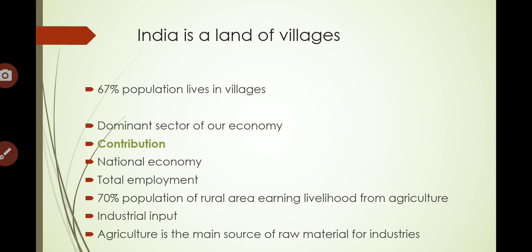Raw material examples include cotton textile, jute, paper, and the sugar industry, which is totally dependent on sugarcane supplied from agriculture. Small-scale cottage industries like handloom, power loom, ginning, pressing, crushing, oil crushing, rice husking, sericulture, and food processing are wholly and solely dependent on raw material from the agriculture sector.